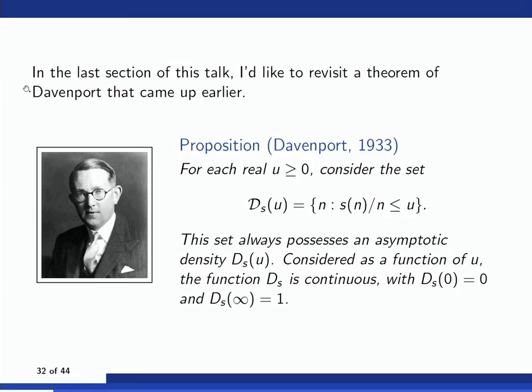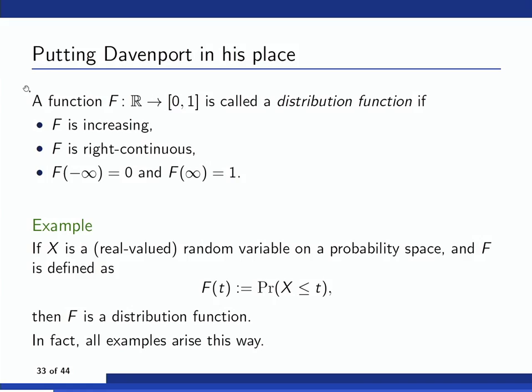In the last section I'd like to revisit Davenport's theorem. Recall: form the set script D_s(u) by collecting all n with s(n)/n below u. This set possesses an asymptotic density, the density function is continuous, equals zero at u = 0, and equals one at infinity. If you haven't seen this sort of thing before it might seem like a strange isolated result, but there's actually quite a framework for these results.